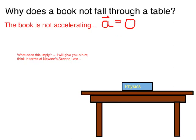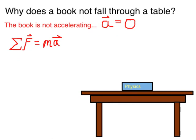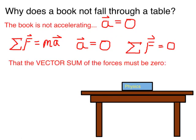What does that imply? Think in terms of Newton's second law. We know that Newton's second law is F equals ma, and the acceleration of the book is equal to zero. Putting these two things together, we see that therefore the net force on the book must also be zero. The vector sum of the forces on the book must be zero.